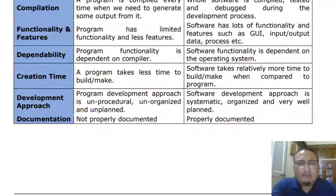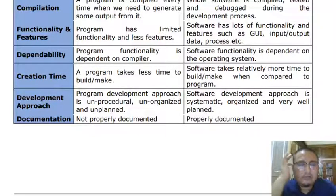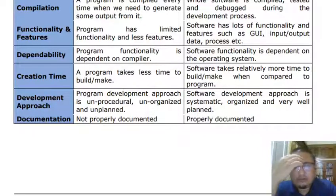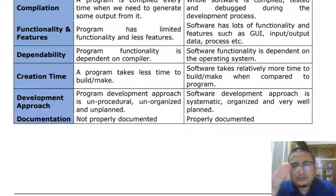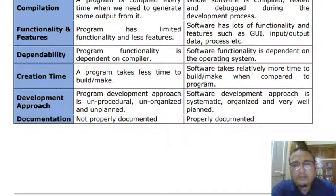In terms of documentation, a program need not be documented because it is meant for one's own use, whereas a software system has to be properly documented because it is built by one for another. For software, many documents must be created: feasibility study document, requirement analysis and specification document, plan document, design document, coding itself is a document, test document, deployment document, user manuals, and so on and so forth.